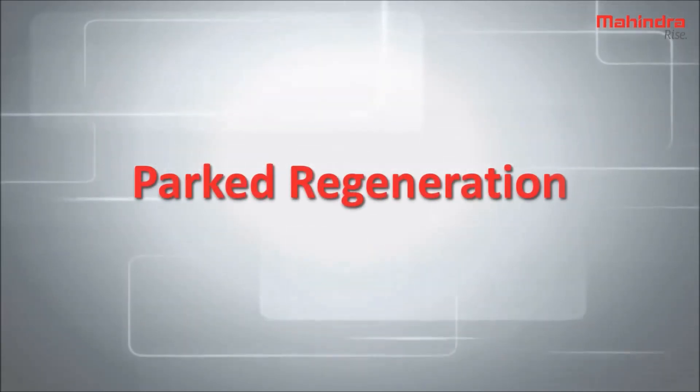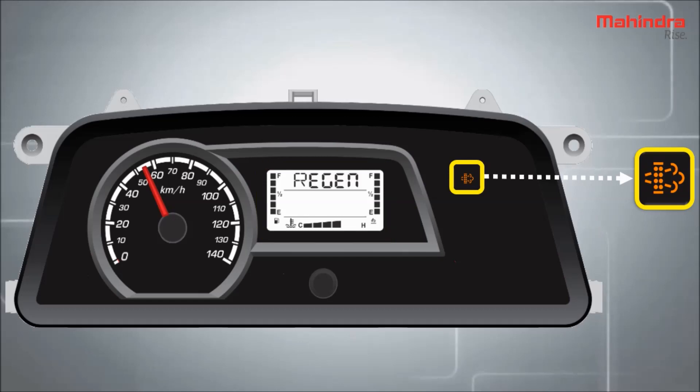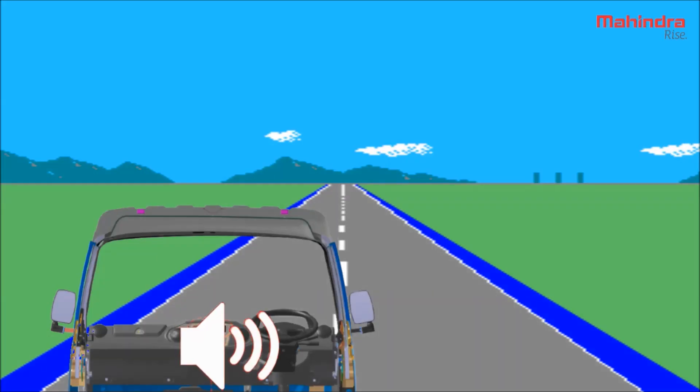Now we will discuss about the third type of regeneration. During this process, an amber signal of DPF regeneration is illuminated on the instrument cluster. Along with this, you will also hear the beep sound. In this situation, there is a need to complete the regeneration process in the vehicle. For performing this, the driver has two options.